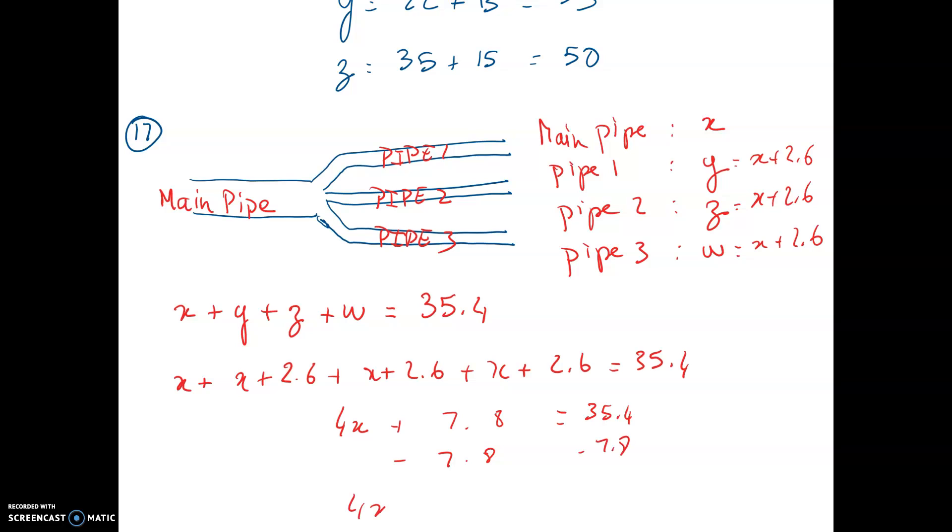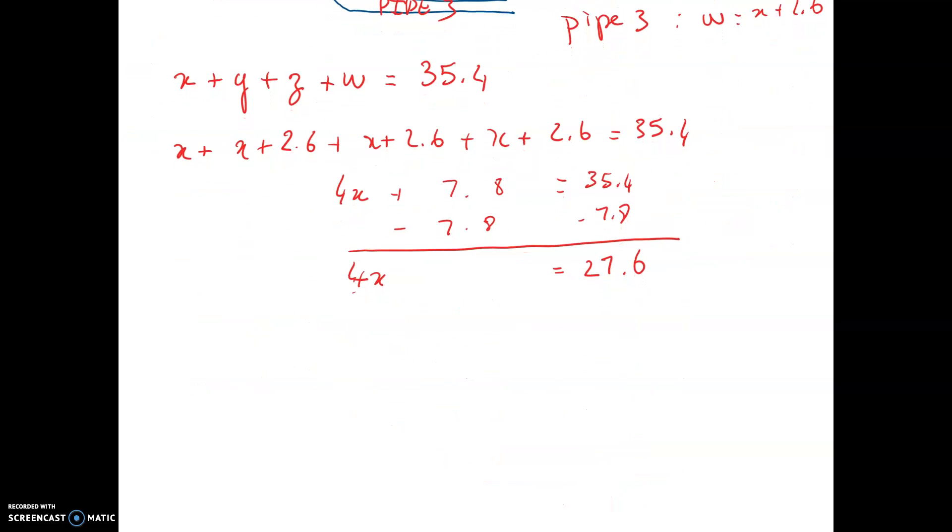I'm subtracting 7.8 from both sides. I end up with 4X equal 27.6. And then I divide by 4.